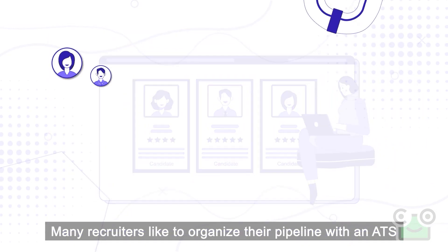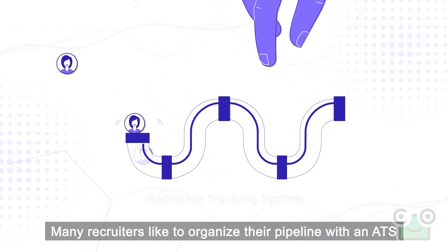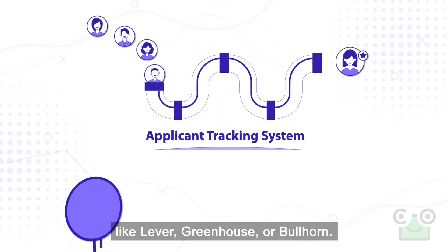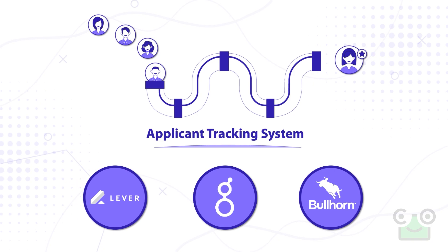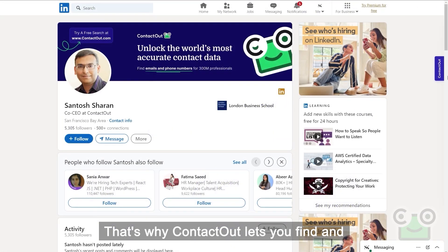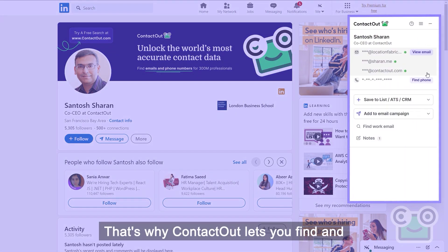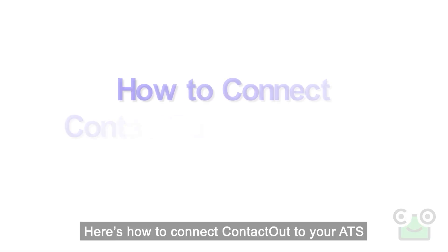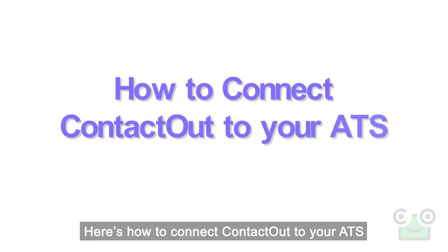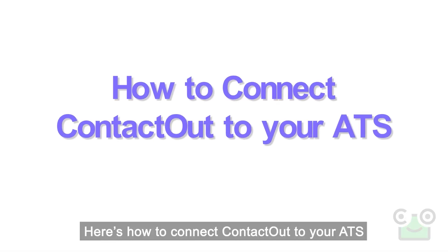Many recruiters like to organize their pipeline with an ATS like Lever, Greenhouse, or Bullhorn. That's why ContactOut lets you find and send contact data straight to your favorite ATS. Here's how to connect ContactOut to your ATS.